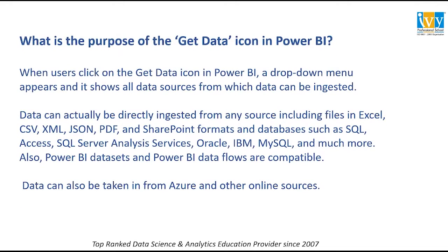What is the purpose of the Get Data icon in Power BI? When you open Power BI, you will find the Get Data option on the left-hand side panel. As the name suggests, Get Data means bringing data into Power BI. When users click on the Get Data option, a drop-down menu appears showing various data sources from which data can be ingested — such as Excel, CSV, XML, JSON, PDF, SharePoint, databases like SQL, Access, Oracle, MySQL, and more. Power BI datasets and Power BI dataflows are also compatible, and data can also be taken from Azure and other online sources.